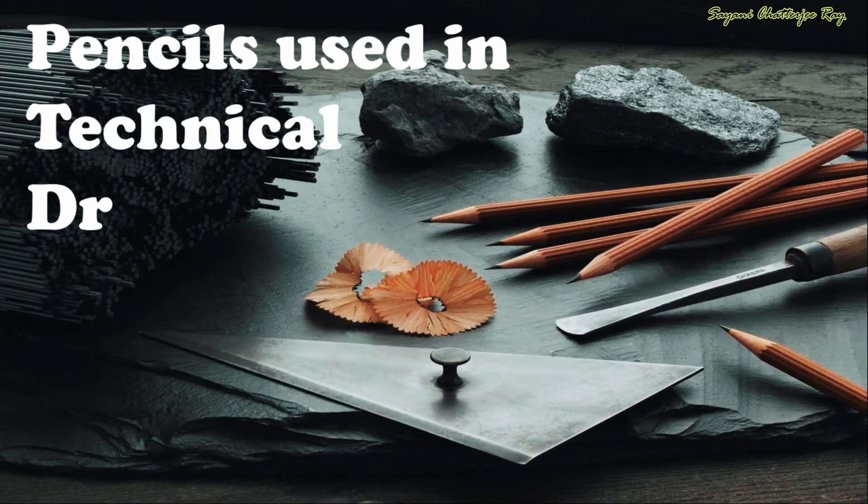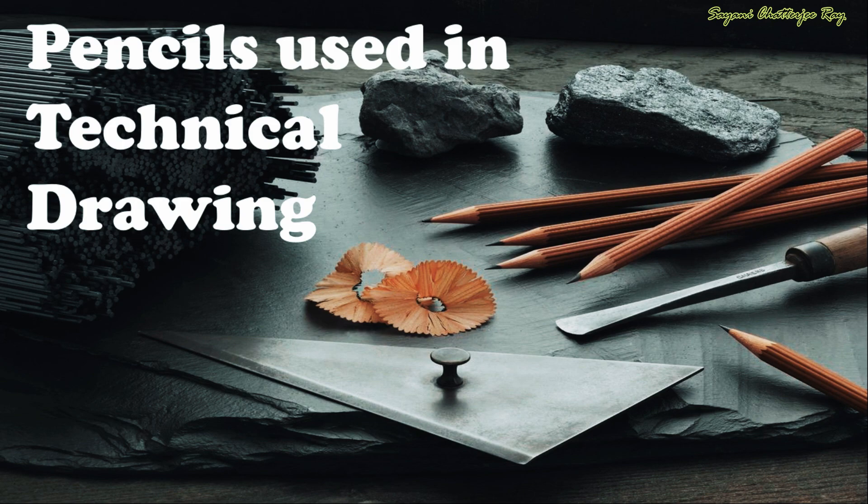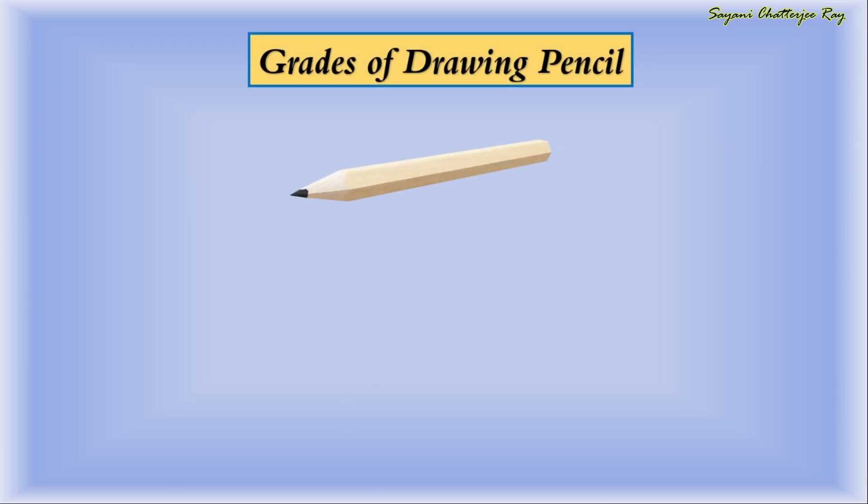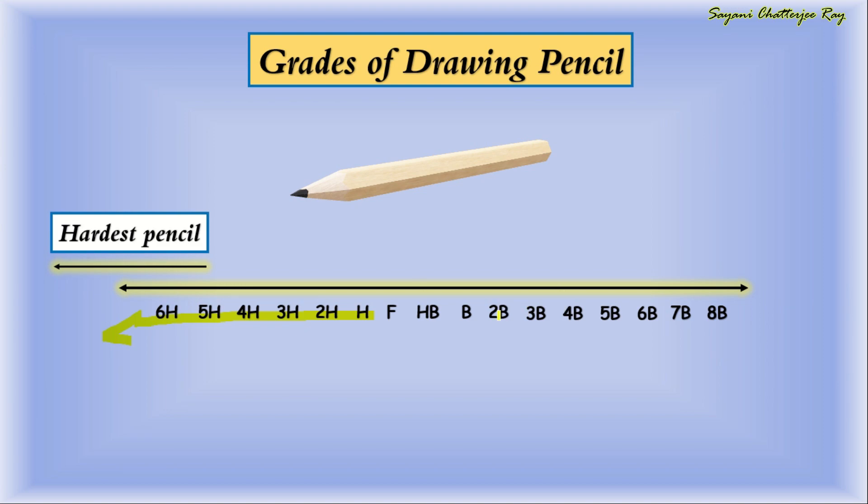Now we will learn the different grades of pencil used in technical or engineering drawing. The drawing pencils are available in HB, B, 2B, 3B, 4B, 5B, 6B, 7B, and 8B grades. They are also available in F, H, 2H, 3H, 4H, 5H, and 6H. When moving from H to 6H, it is of the hardest grade pencil. When moving from B to 8B, they are of softest grade pencil.